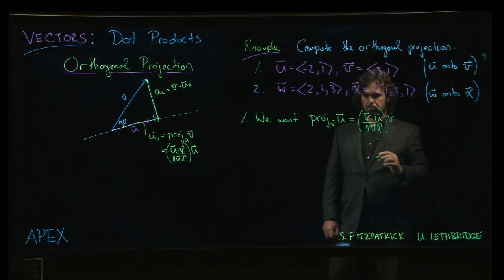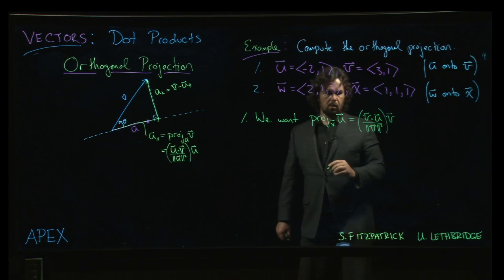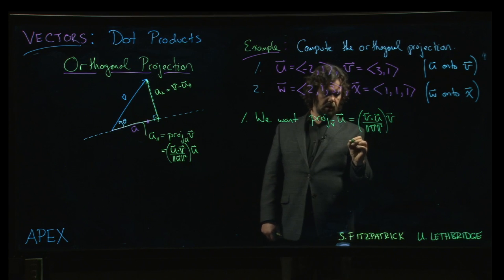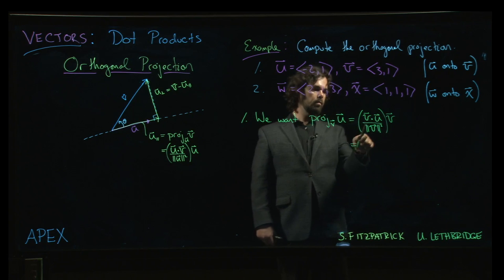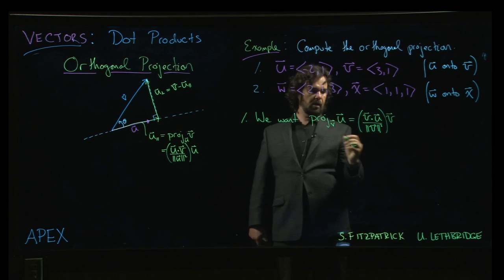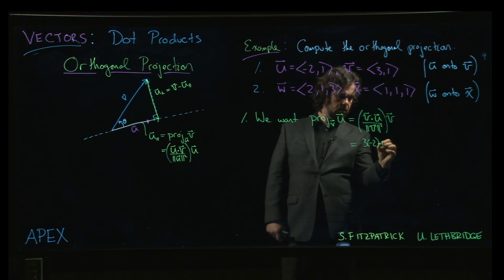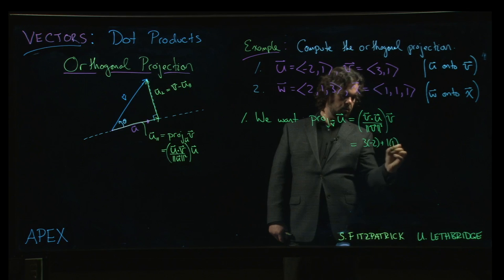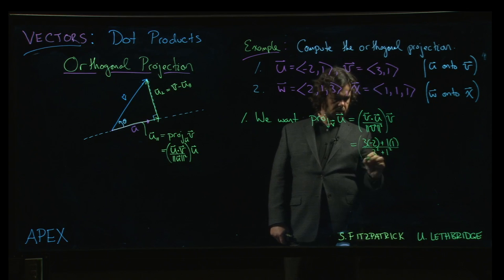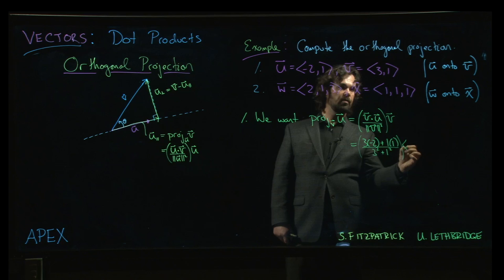Okay, so let's work out what those values are. So v dot u, we're going to do 3 times -2 and then 1 times 1.